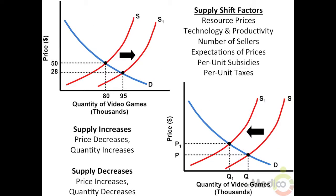A change in any of the following will cause the supply curve to shift to the right, causing the market price to decrease and quantity to increase, or shift supply to the left, causing the market price to increase and quantity to decrease. First, resource prices — a decrease in the cost of production will shift supply to the right, causing a lower market price and a greater equilibrium quantity.